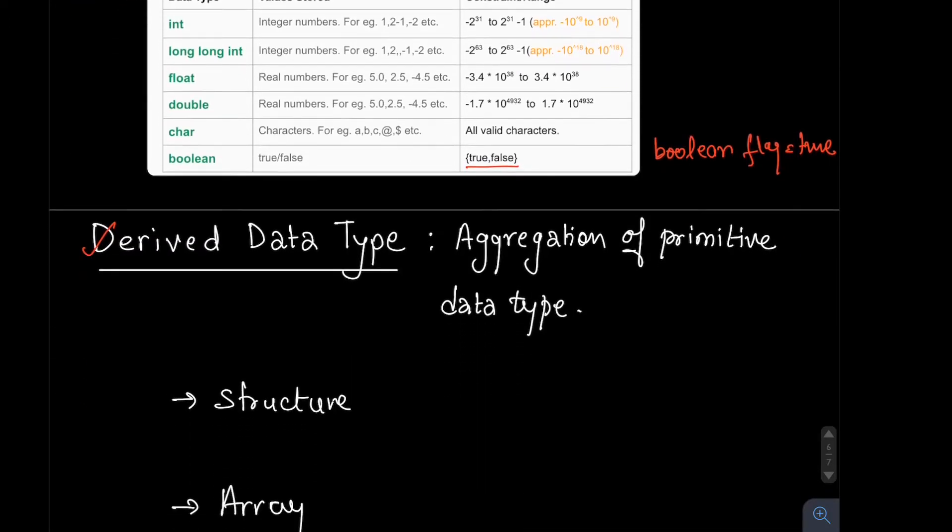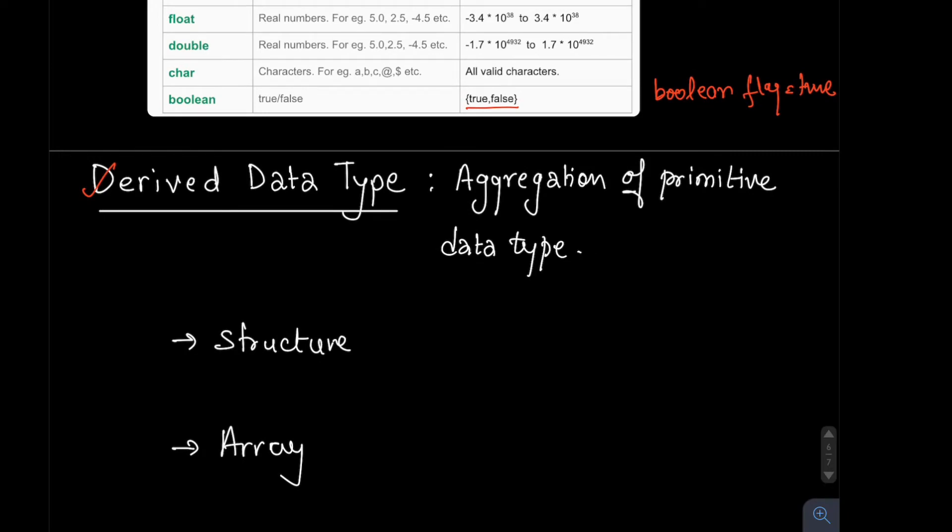In the next section, we'll see there are some data types known as derived data types. Derived data types are basically aggregation of primitive data types. We will discuss two types of derived data types.